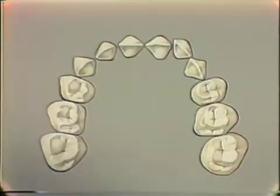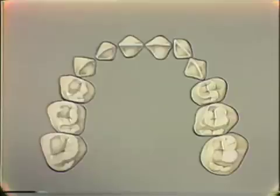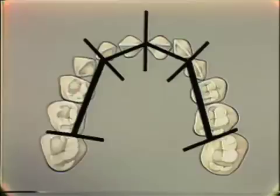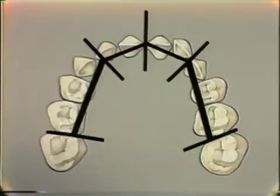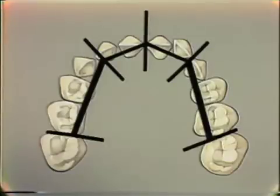Step 3 is to determine the amount of space available for the eruption of the cuspid and bicuspids. To do this, we measure from the point determined in our patient's case — just on the mesial of the lower right cuspid — back to the mesial of the lower first permanent molar. On the left, the point was nearly at the distal of the lower left lateral incisor, and we measure from this point back to the mesial of the first permanent molar.